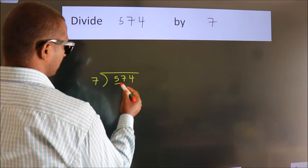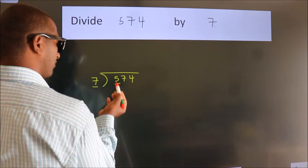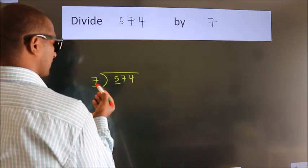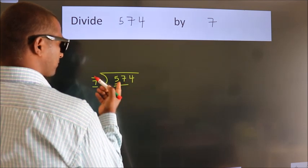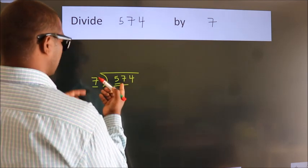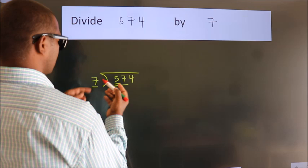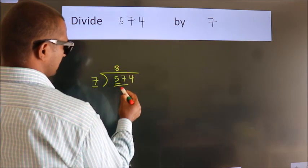Here we have 5. Here 7. 5 is smaller than 7, so we should take two numbers: 57. A number close to 57 in the 7 times table is 7 times 8, which is 56.